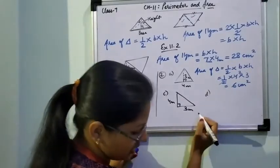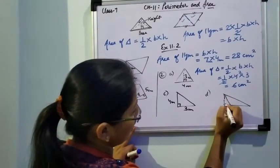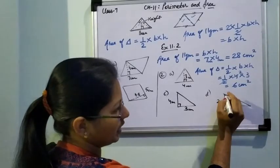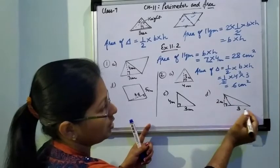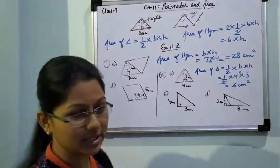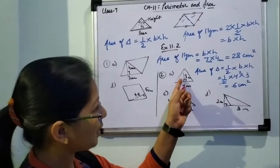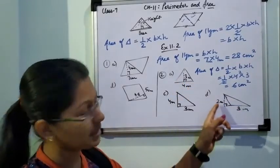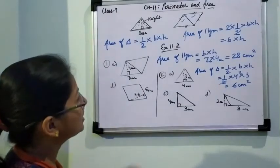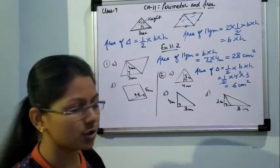For part D, the diagram shows an obtuse angle triangle with base 3. In an obtuse angle triangle, the height falls outside the triangle — that is not an issue. If this is the base, its opposite vertex is here, so the height must be drawn from that vertex. So we still apply half into base into height. In summary: in an acute triangle, height is inside; in an obtuse triangle, height is outside; and in a right angle triangle, height is on the side of the triangle itself.